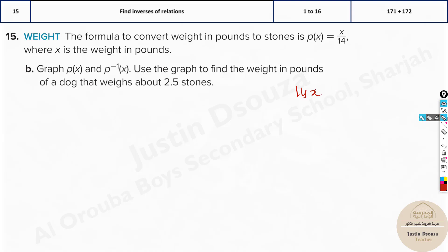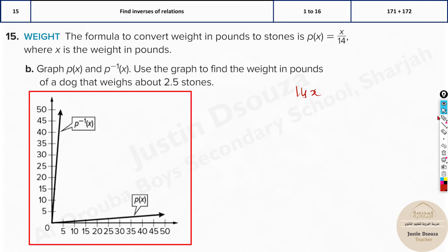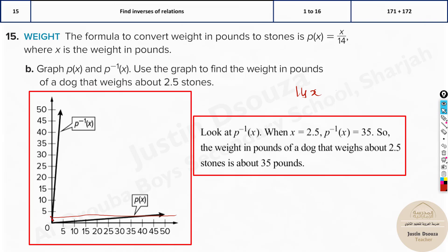Let's do it by graph. At 2.5 stones, you draw a straight line on the inverse graph and it will land somewhere around 35 pounds. You can just multiply 14 by 2.5 and check — it is 35 pounds. That's how we solve this. It's another straightforward problem; you might only get the conversion, not the graphing.